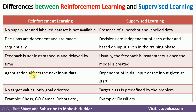In reinforcement learning, the agent's action affects the next input data. Whatever action the agent takes at time t will affect the action at time t+1. If the action at t gets a positive reward, the agent will continue in the next step; if it gets a negative reward, it may take a different action. In supervised learning, the initial training data determines how new data will be classified.